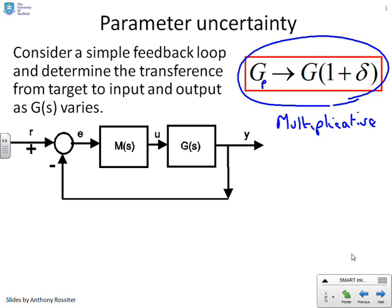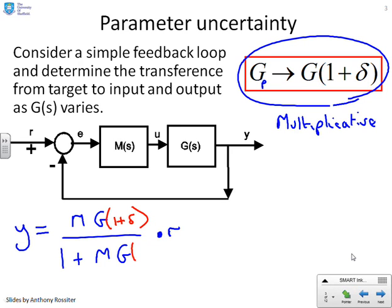What we need to do is say, how do the transferences from the target to the input and the target to the output change when you change G? Well, let's write down one of the transferences. So it's y equals MG over 1 plus MG into R. So clearly, if G has gone to G times 1 plus delta, all I'm doing is adding a 1 plus delta into this formula. So I can see fairly clearly how the transference will change if I introduce uncertainty. In a similar way, I can do the input U equals M over 1 plus MG, 1 plus delta into R.